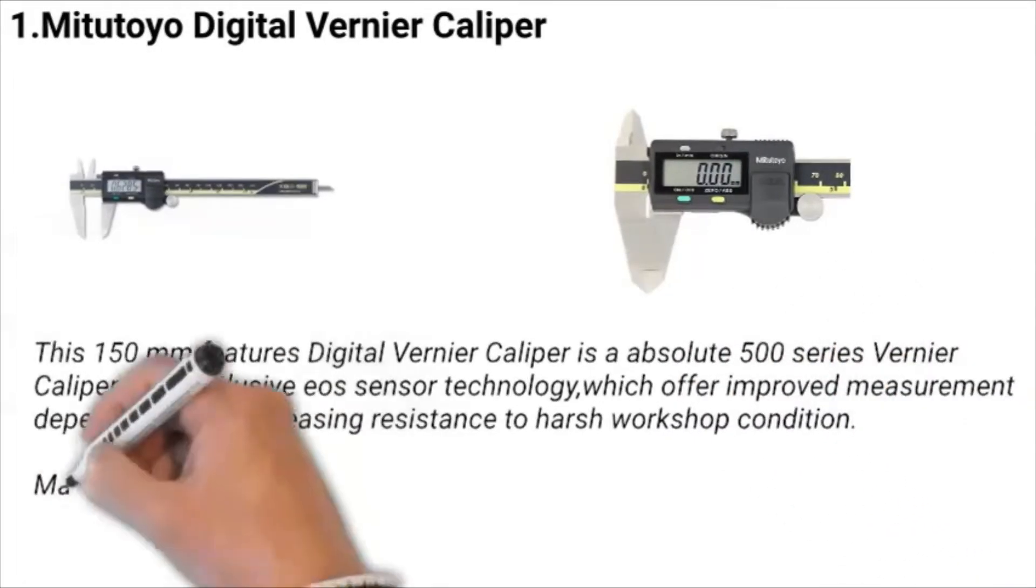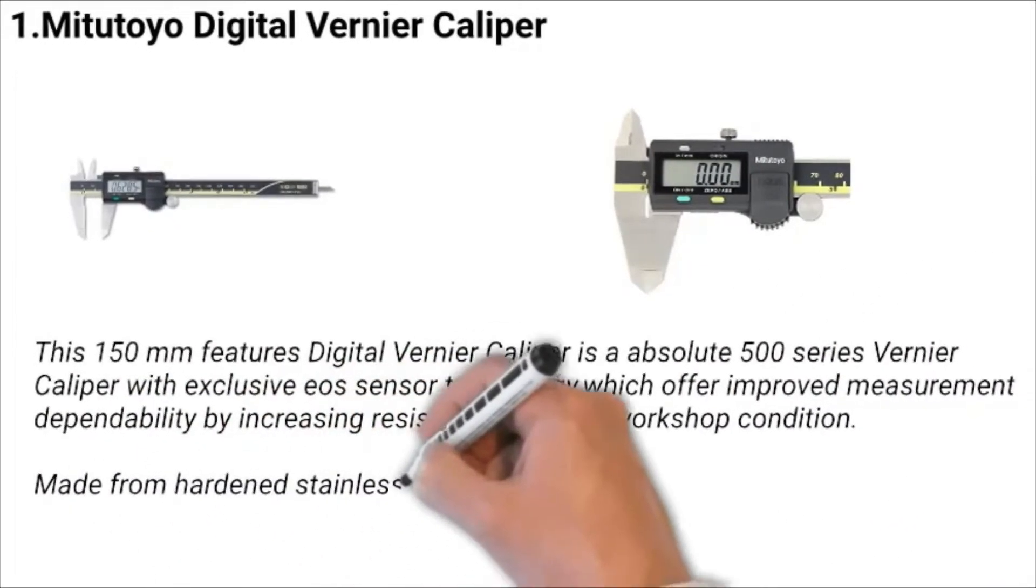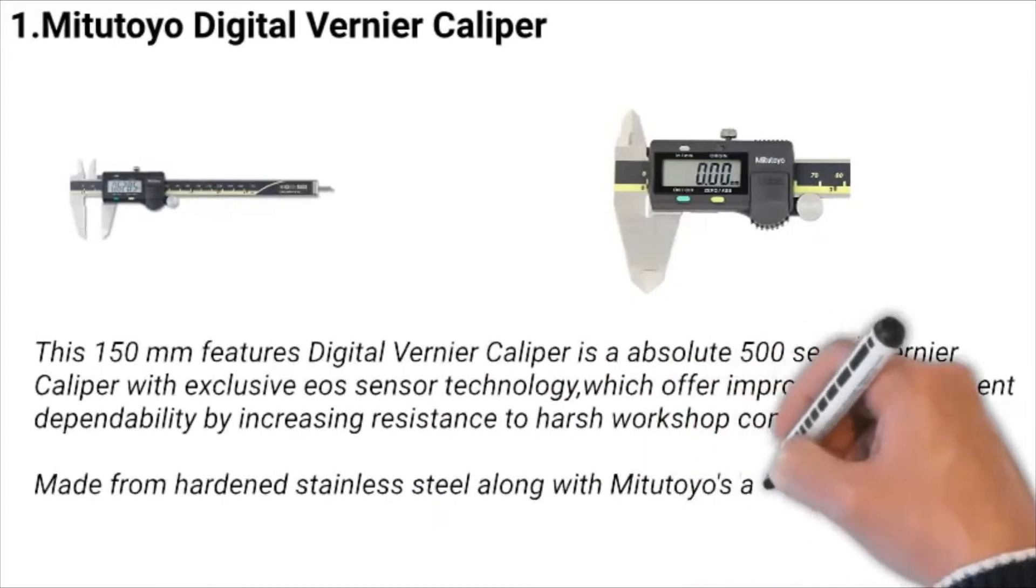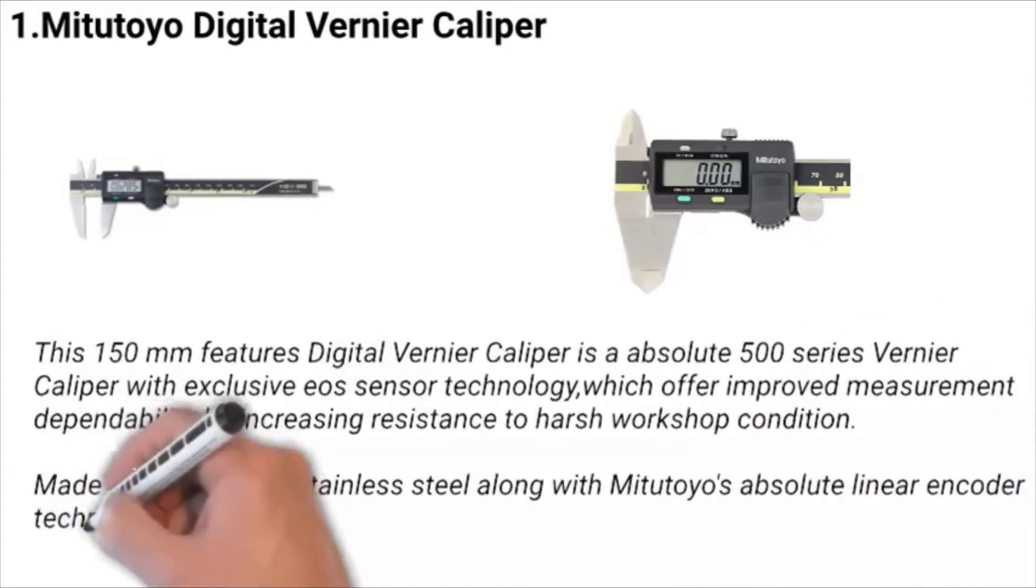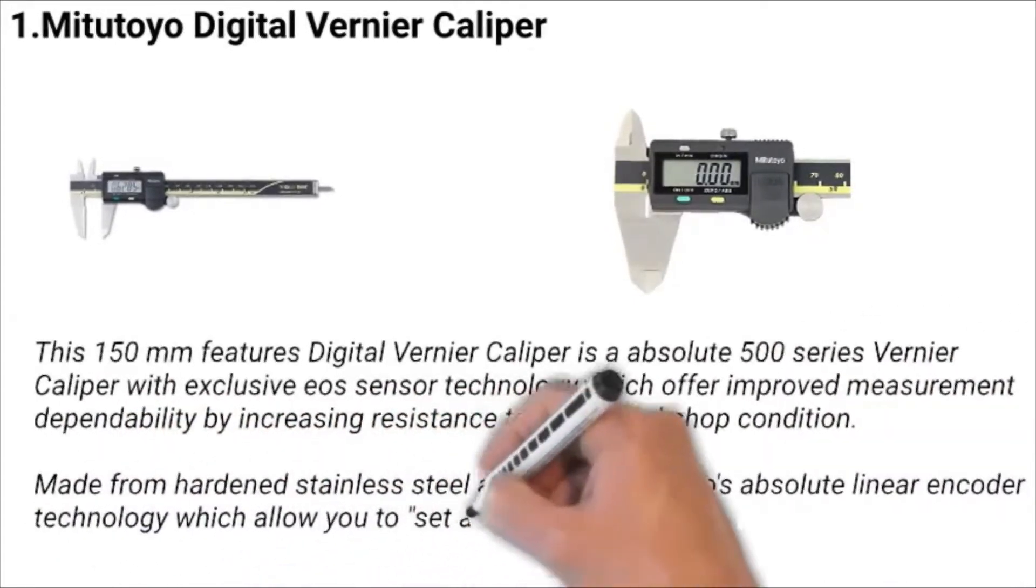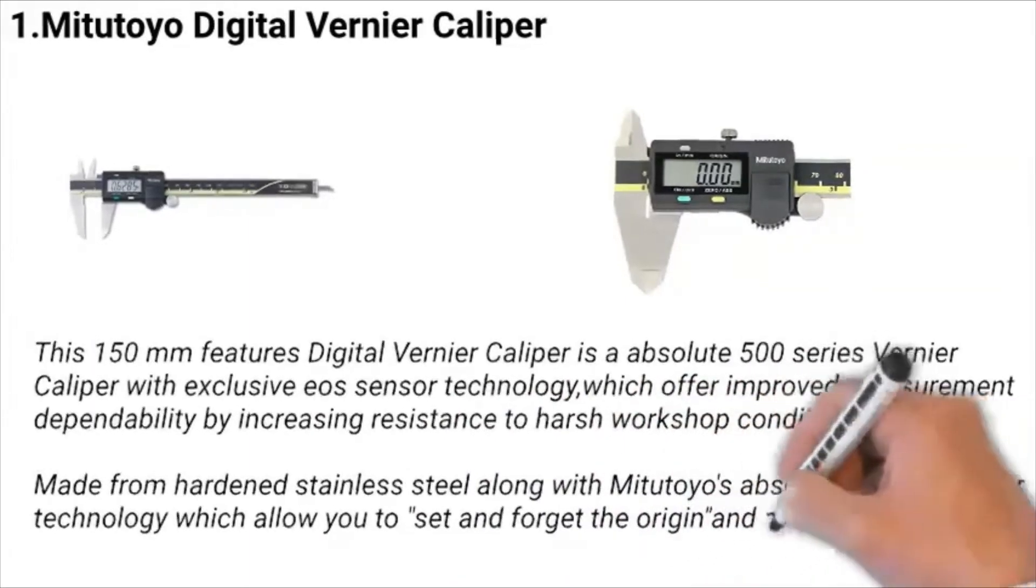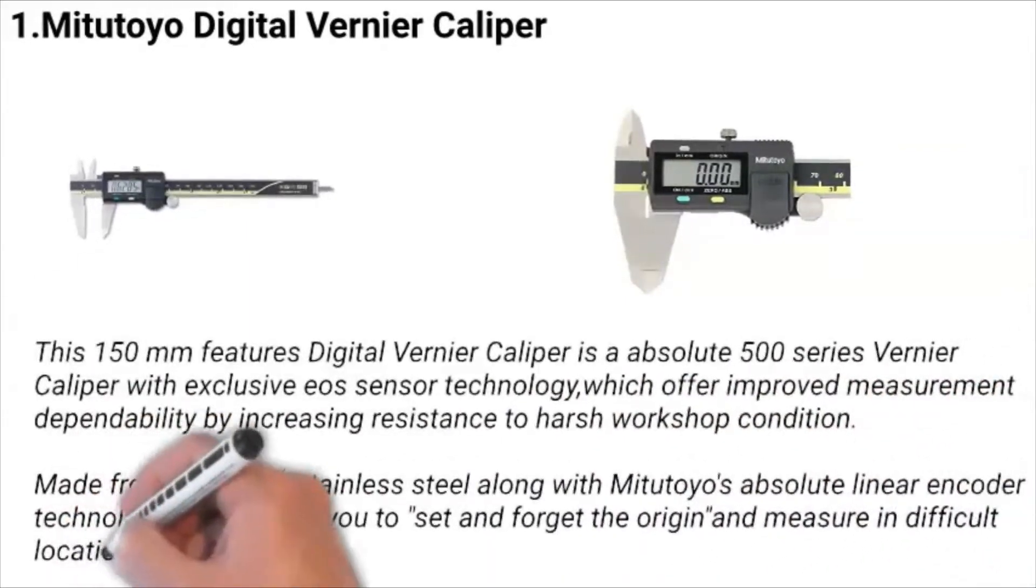Made from hardened stainless steel along with Mitutoyo's Absolute linear encoder technology, which allows you to set and forget the origin and measure in difficult workshop locations.